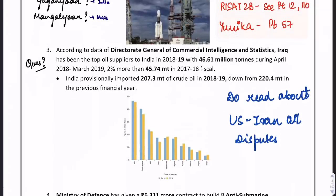Iraq was the top oil supplier to India in 2018–19. This data was collected by the directory. A question could come asking which country is the top oil supplier to India in FY 2019 — the answer is Iraq. The amount of oil supplied was 46.61 million tons.